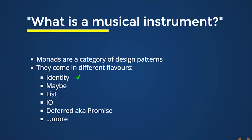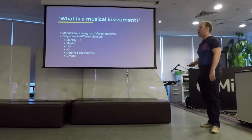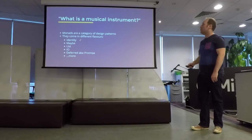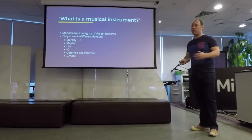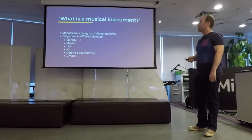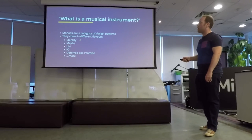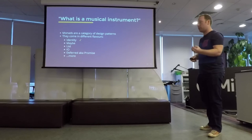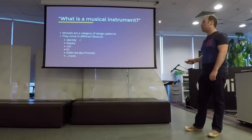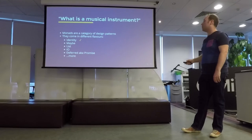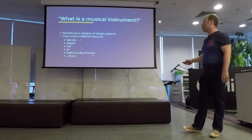Really, asking what is a Monad is like asking what is a musical instrument — it's an abstract thing. There's no concrete definition of exactly what every Monad is. Monads are really just a category of different design patterns that come in different flavours. What we've been looking at so far is the identity Monad — that's why it's not much practical use to us, because it's the simplest form and you have to understand it to move on to others. There are more interesting ones: the Maybe Monad, the List Monad for working with data where you don't know if it's a collection or a single item, the IO Monad which Haskell relies on for talking to the outside world, Deferred also known as The Promise, and a whole bunch more.